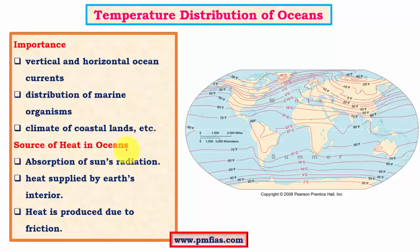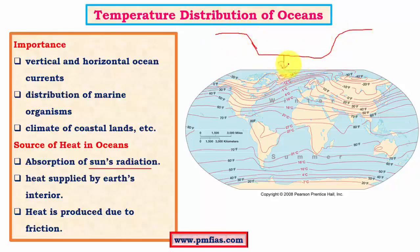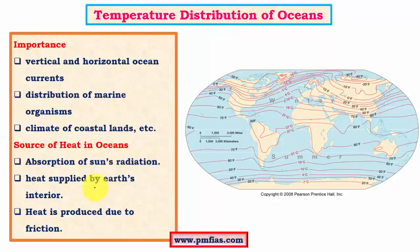Where does all this heat energy come from? The obvious source is solar insolation. Other sources include heat generated by the earth's interior. The oceanic crust is about 5 to 30 kilometers thick, much thinner than the continental crust at 50 to 70 kilometers, so the oceanic crust is very close to the mantle region. The mantle has various hot magma, and some of that heat leaks towards the oceanic crust. However, when compared to solar insolation, the heat from the earth's interior is not so significant. There is also heat produced by friction between water layers and between water and winds, but again this is quite insignificant compared to solar insolation.